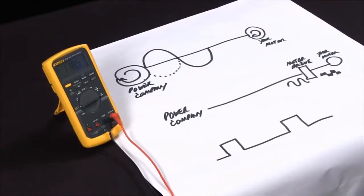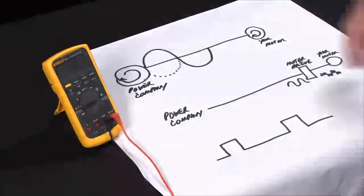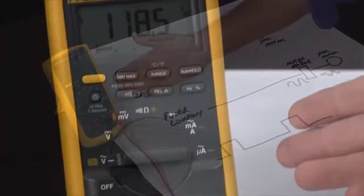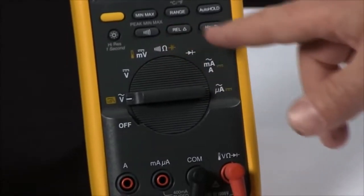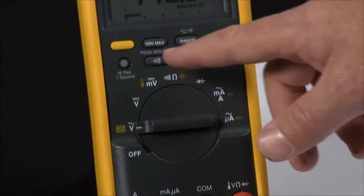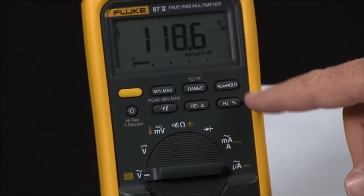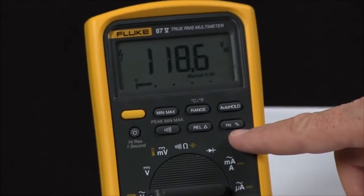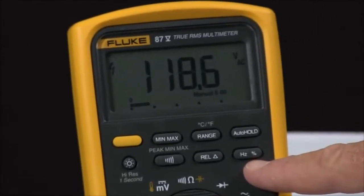Fluke multimeters include a lot of advanced measurement capabilities that can enhance your troubleshooting style. On the Fluke 87.5, in addition to your standard measurements, we also have some more advanced measurements up along the top here. The one we're going to be discussing now is the frequency and duty cycle.